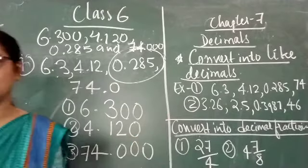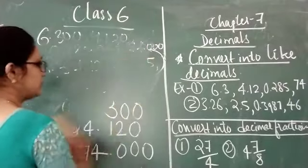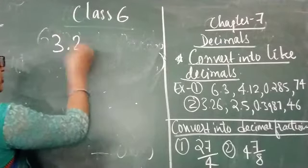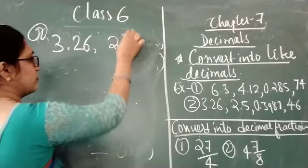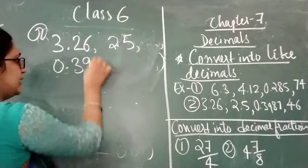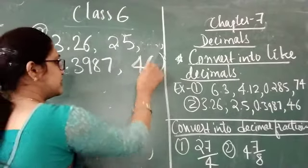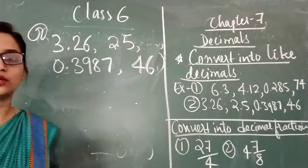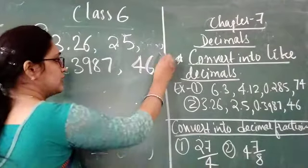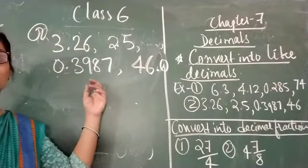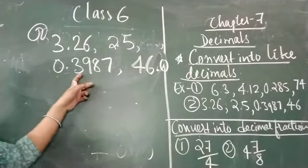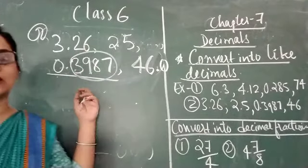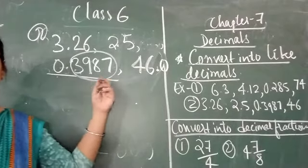Now example number 2. The question gives us 3.26, 2.5, 0.3987, and 46. Here 46 has no decimal, so we have to put a decimal point making it 46.0. We also have to find the maximum decimal place value — the number 0.3987 has 4 decimal place values.